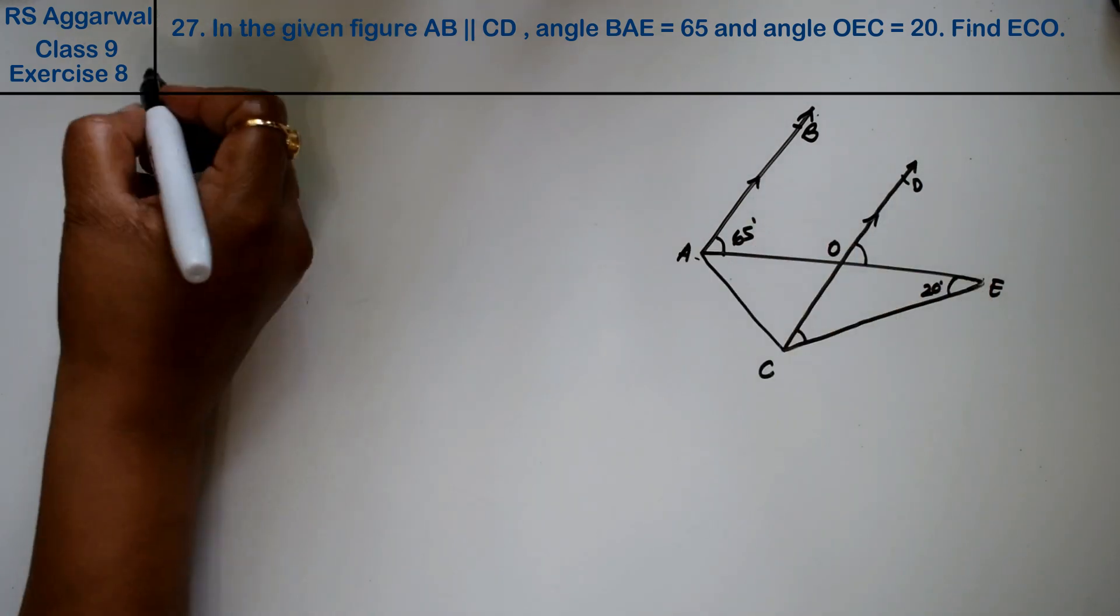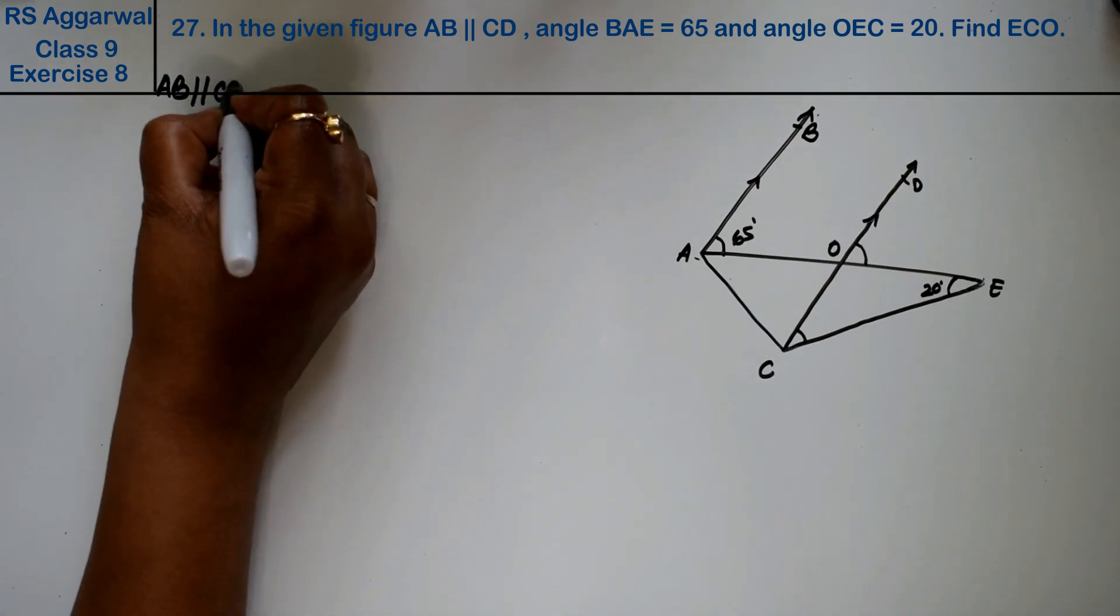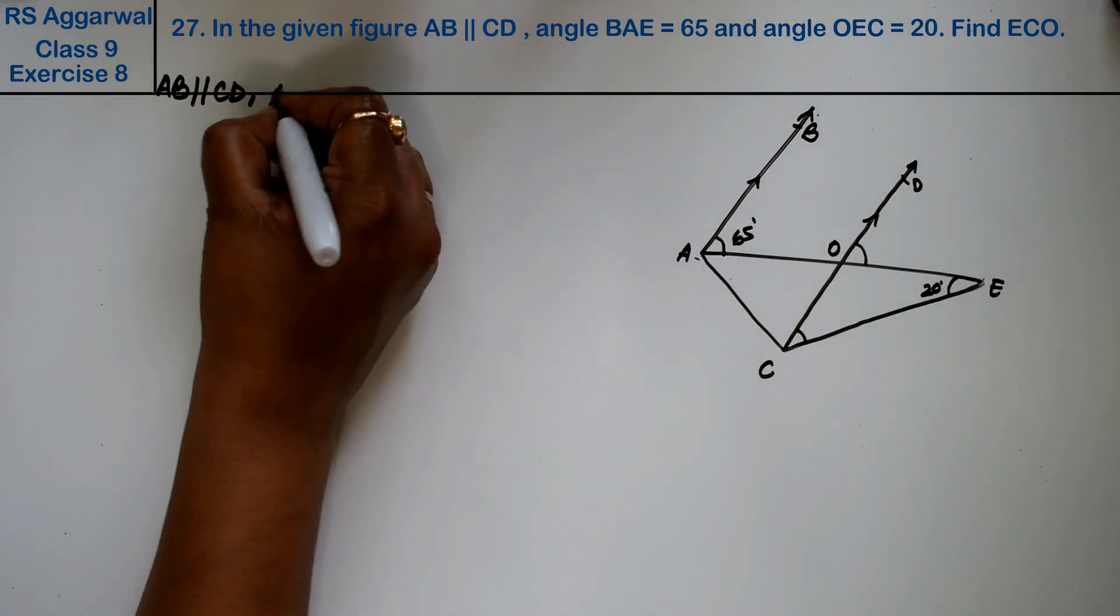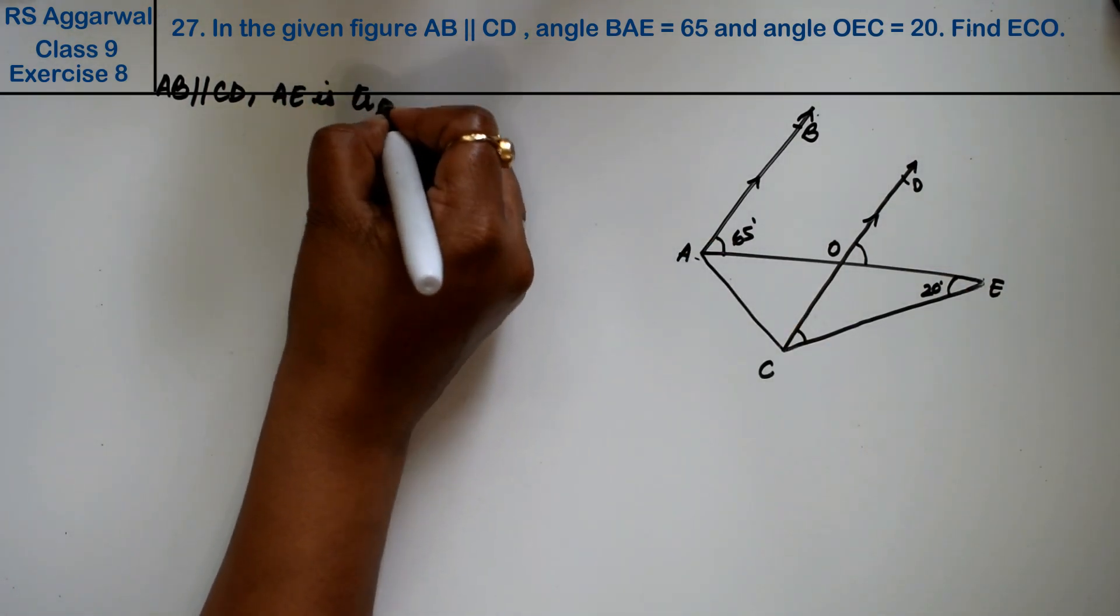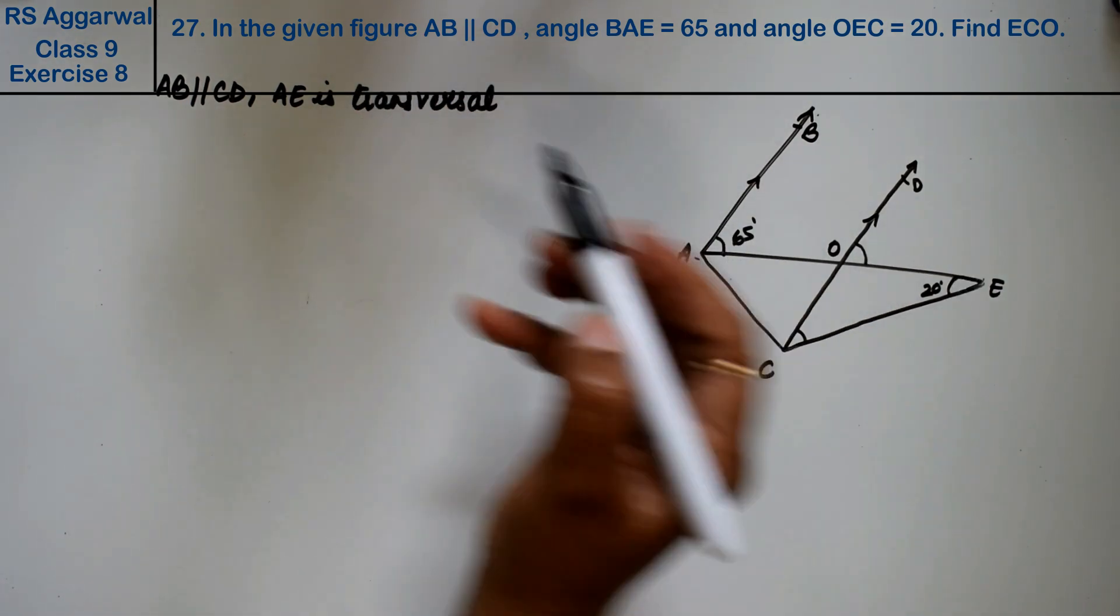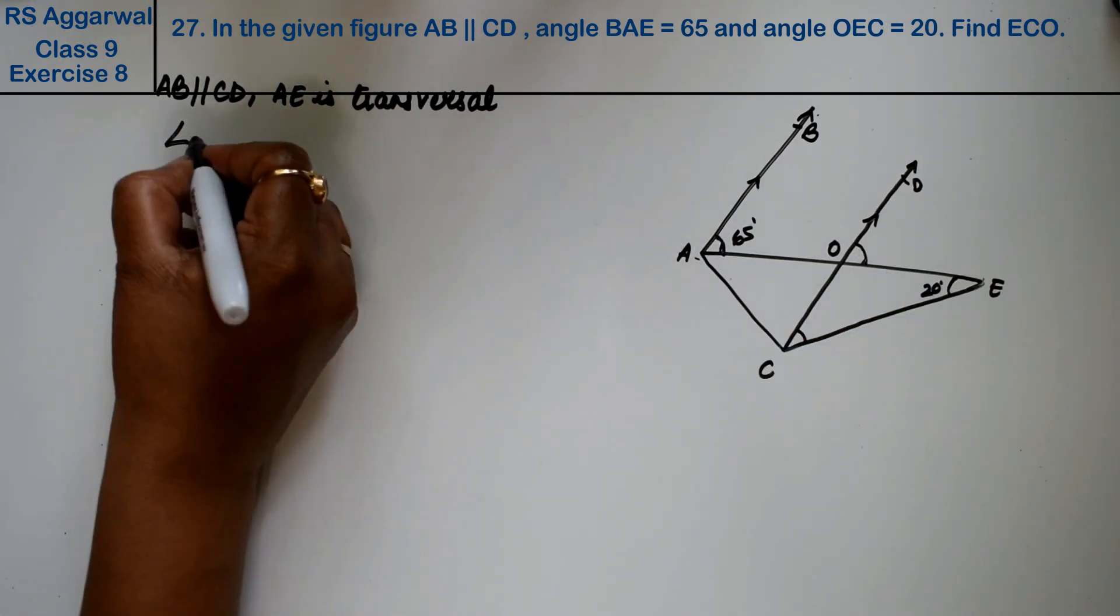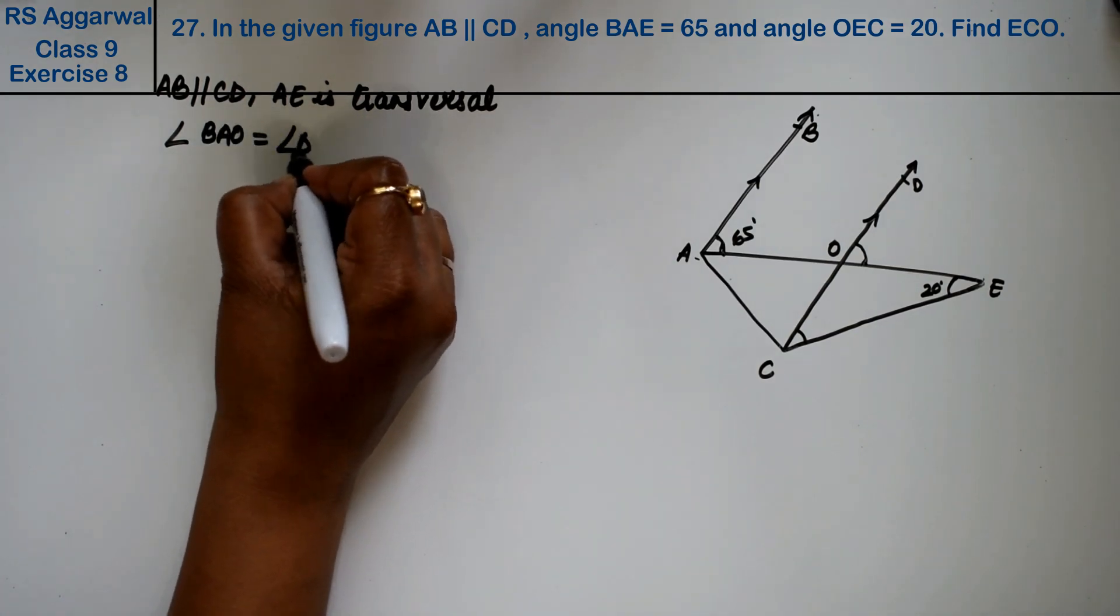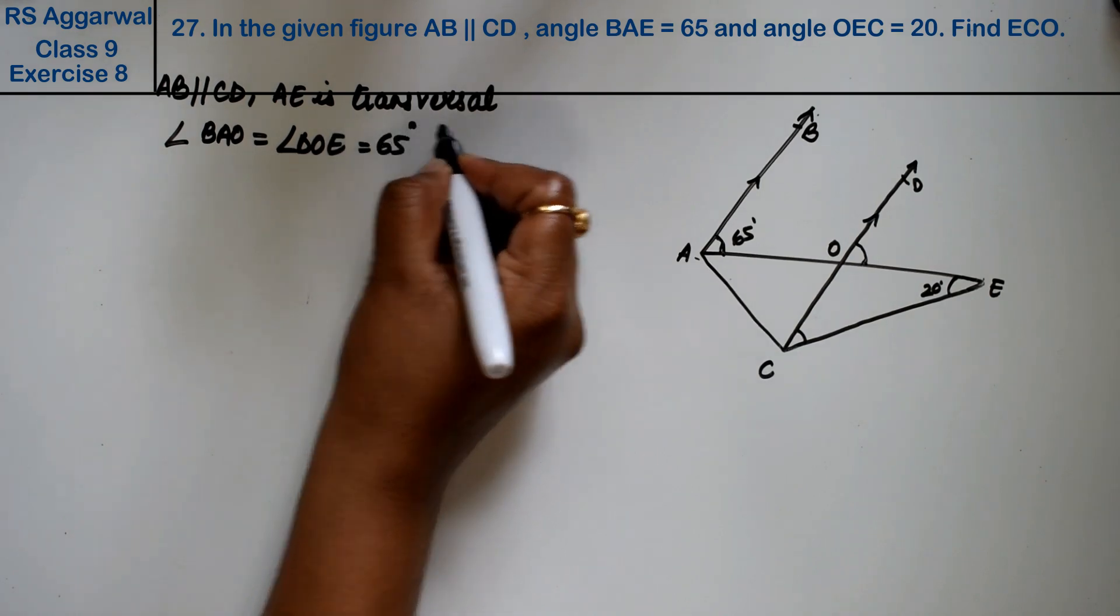Now we know that AB is parallel to CD and AE is transversal. So this angle and this angle are equal. What is angle BAO equals to angle DOE? It is 65 degrees. Why? Because these are corresponding angles.